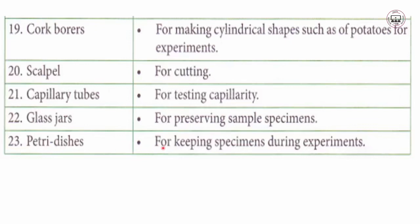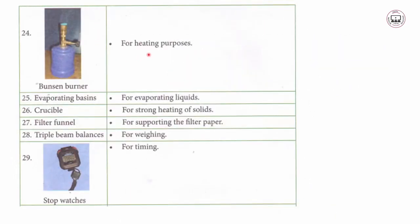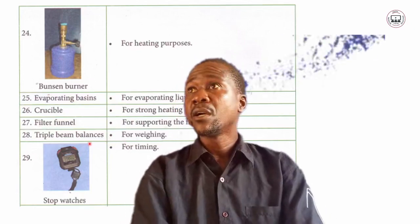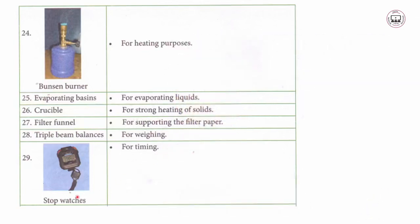Number twenty-one, glass jars — for preserving sample specimens. Number twenty-two, petri dishes — for keeping specimens during experiments. Number twenty-three, the Bunsen burner — for heating purposes. Number twenty-four, evaporating vessels — for evaporating liquids, which is part of many laboratory experiments. Number twenty-five, the crucible — used for strong heating of solids. Number twenty-six, the filter funnel — for supporting filter paper. Number twenty-seven, the triple beam balance — for weighing mass of different materials brought to the lab. Number twenty-eight, the stopwatch — for timing experiments.